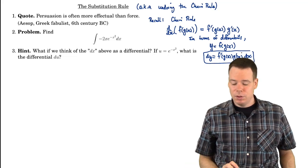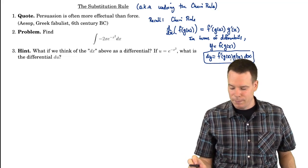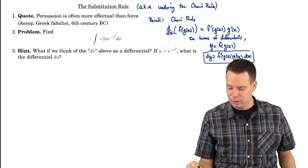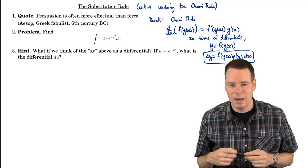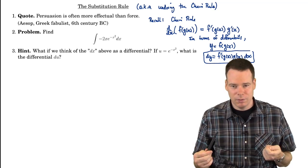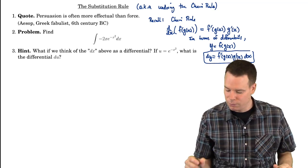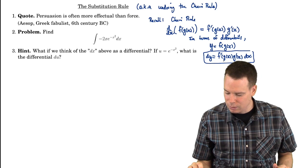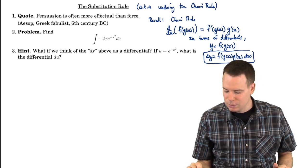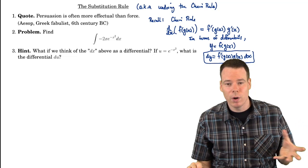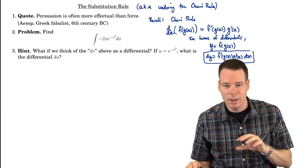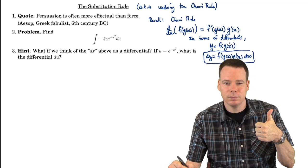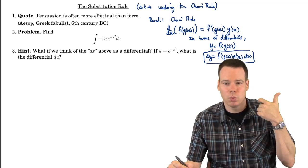This is convenient because if you're staring at an integral where the integrand looks like f prime of g of x times g prime of x dx, you can immediately say this looks like it came from the derivative of a composition of functions f and g. So if you can spot a piece of the integrand — a possibly complicated function g — where its derivative g prime also appears, then you know that inside function.